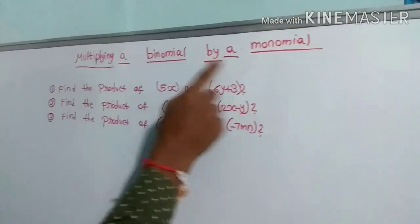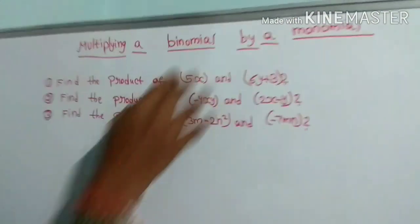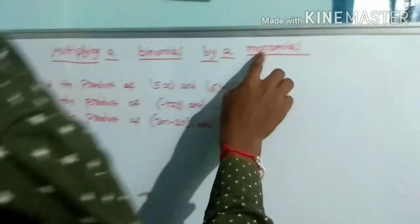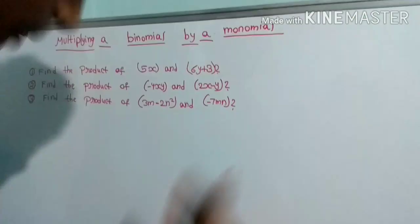We are going to multiply binomial by monomial. Binomial means two terms. Monomial means only one term. That means we can multiply by the multiple terms.